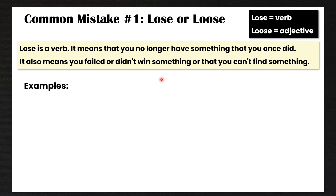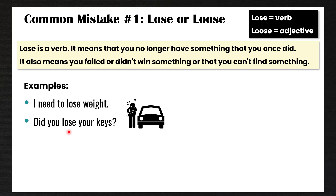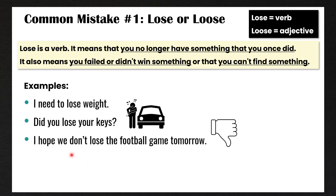For example, you can lose a video game, or it means that you can't find something — I always lose my glasses. For example: I need to lose weight. Did you lose your keys? I hope we don't lose the football game tomorrow. So in all of these examples, we have to use the verb lose. Loose with two O's is an adjective, and I will explain the difference in the next slide.